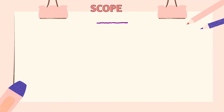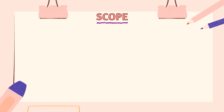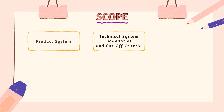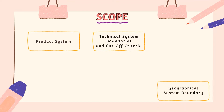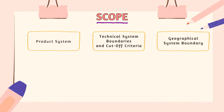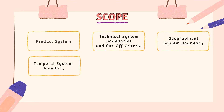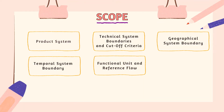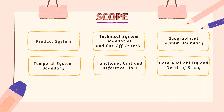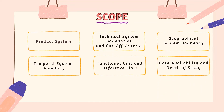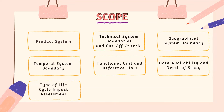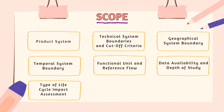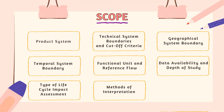There are nine elements to understand in the scope: product systems; technical system boundaries and cutoff criteria; geographical system boundary; temporal system boundary; functional unit and reference flow; data availability and depth of study; type of life cycle impact assessment; methods of interpretation; and critical review.